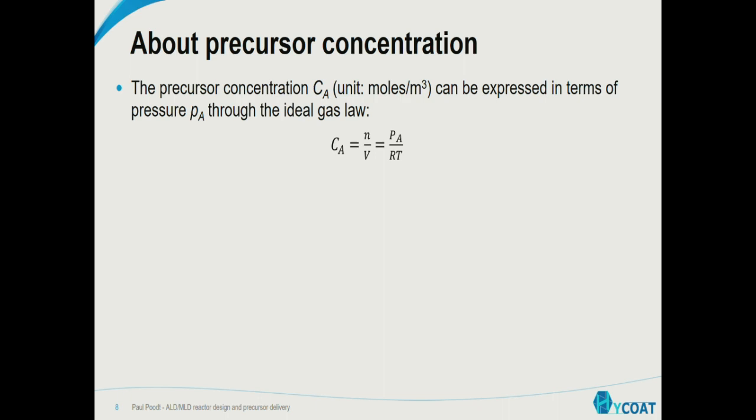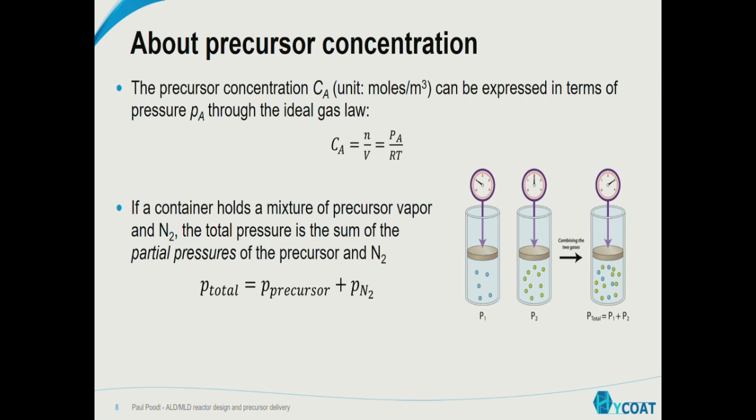Let's look at a simple reaction where a gaseous precursor reacts with a surface site to form an adsorbed surface species. We can write a rate equation where the reaction rate — the change in concentration of the adsorbed species over time — is a function of a kinetic coefficient containing information about precursor reactivity, sticking coefficient, and deposition temperature. It also depends on the precursor concentration and the concentration of reactive sites on the surface. If we assume the precursor vapor is an ideal gas, there's a relation between concentration and pressure. So in gas-phase reactions, we use precursor partial pressure as a measure for concentration. This is Dalton's law — the total pressure is the sum of partial pressures, and it is the precursor partial pressure that is the measure for concentration.